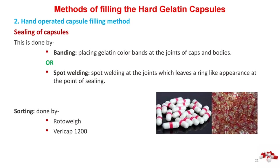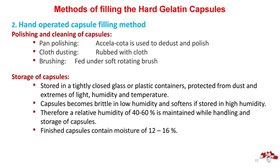Sorting is done by Rottal Veracap. Polishing and cleaning of capsules: pan polishing using axelicota to de-dust and polish; cloth dusting rubbed with cloth; brushing fed under soft rotating brush. Storage of capsules: stored in tightly closed glass or plastic containers, protected from dust and extremes of light, humidity and temperature. Capsules become brittle in low humidity and soften if stored in high humidity; therefore a relative humidity of 40–60% is maintained while handling and storing capsules. Finished capsules contain moisture of 12–16%.